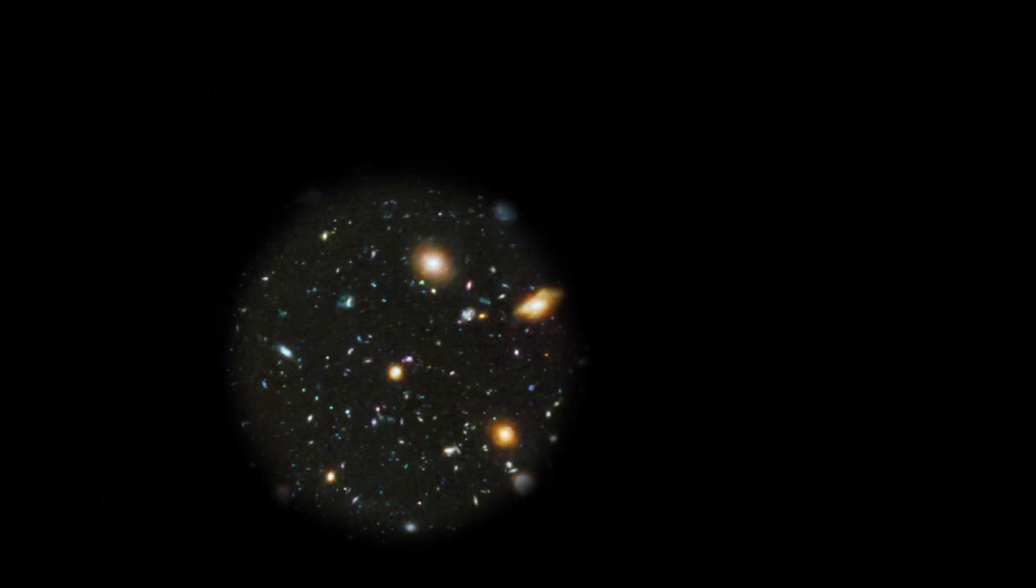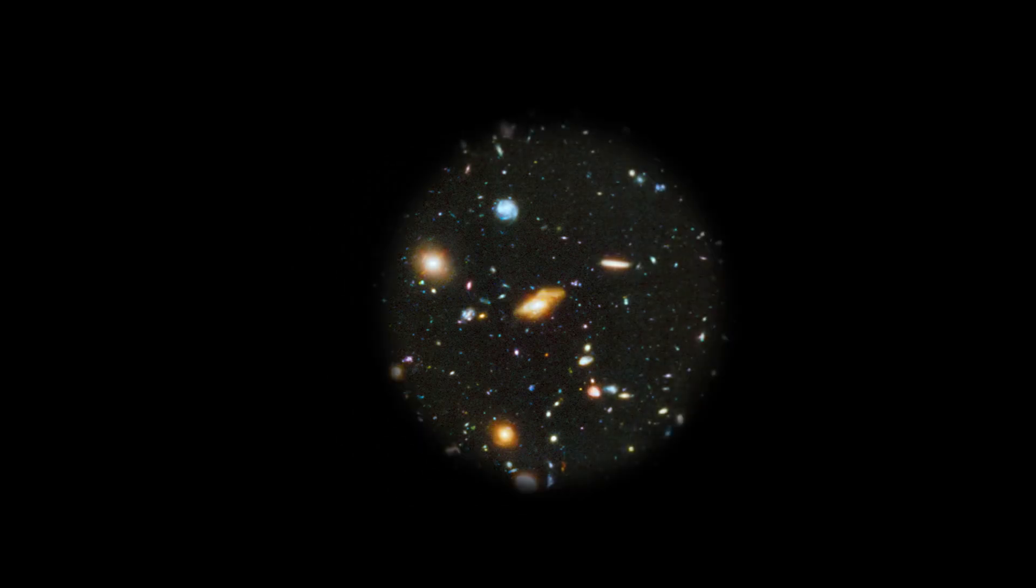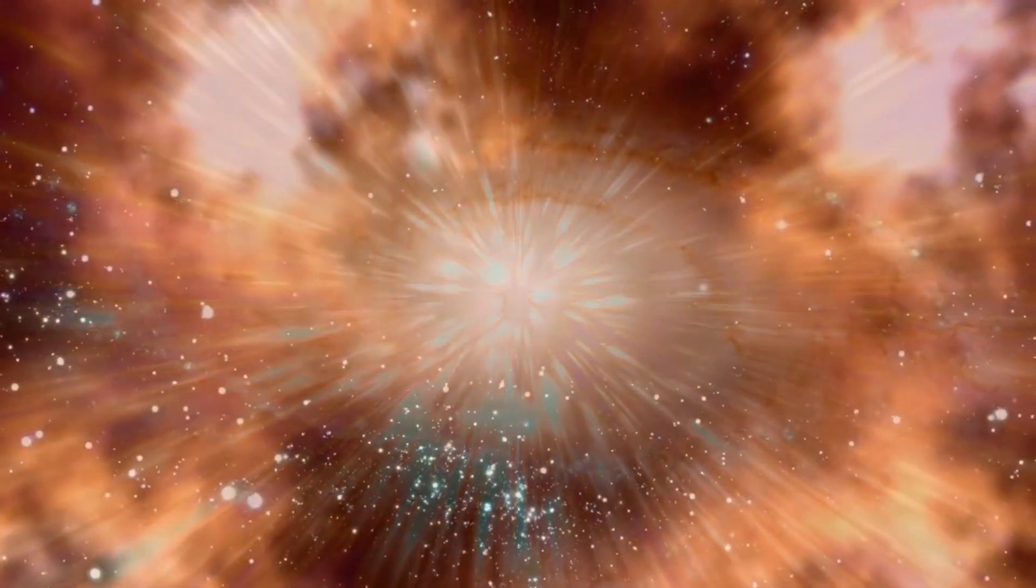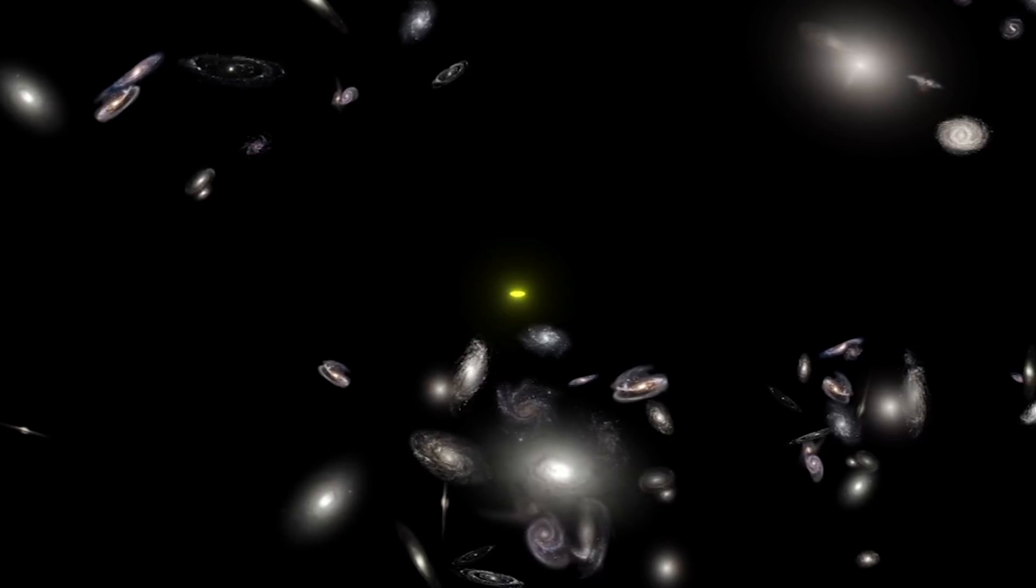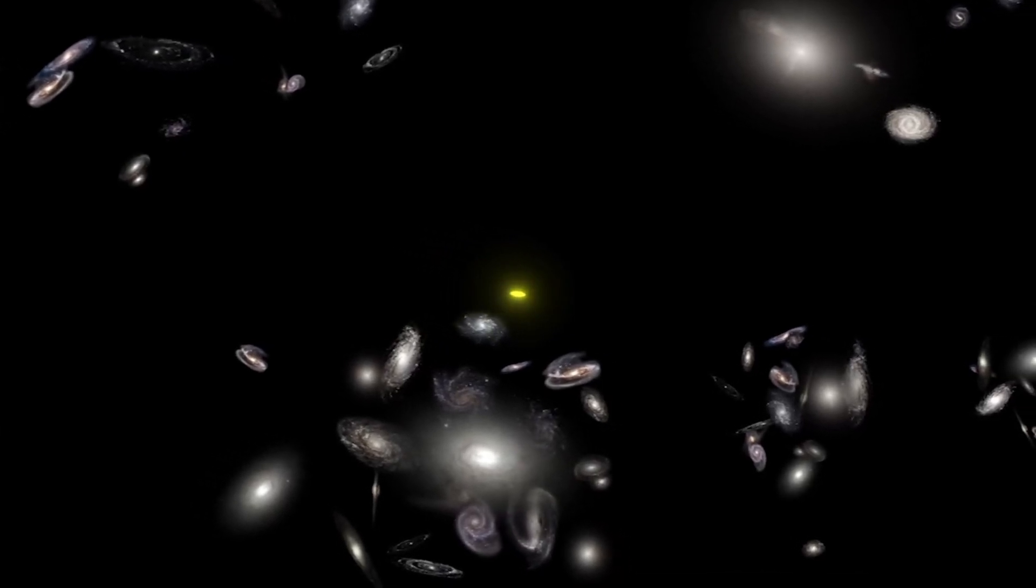The striking images captured by the James Webb Telescope have challenged our understanding of the origins of the universe. Specifically, these images directly contradict the Big Bang Hypothesis, which has long been considered an unquestioned truth by most cosmology theorists. The galaxies captured in these images appear to be too small, smooth, old, and numerous compared to the predictions of the Big Bang Hypothesis.